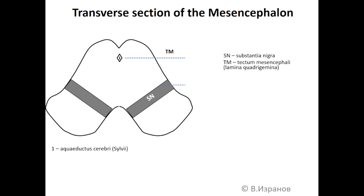The dorsal portion, TM, is tecto-mesencephaly or lamina quadrigemina. Then the middle portion is tegmentum, and the ventral portion is pedunculus cerebri. SGC is substantia grisea centralis.